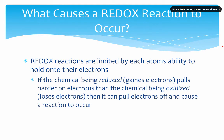So if the chemical being reduced, the one that gains electrons, pulls harder on the electrons than the chemical being oxidized, the one that loses electrons, then it can pull electrons off and cause a reaction to occur. So again, just to recap, the chemical being reduced, the one that's trying to gain electrons, pulls harder onto those electrons than the one that's supposed to lose them. This reduced chemical can pull the electrons off, the reaction happens, and as a result, we get our redox reaction.